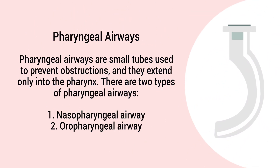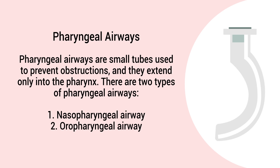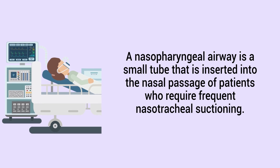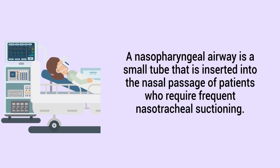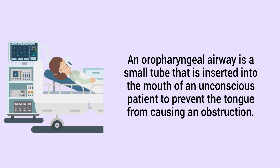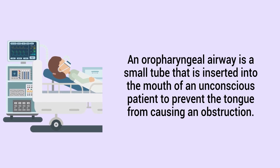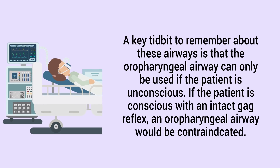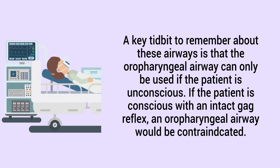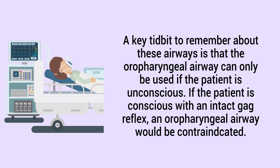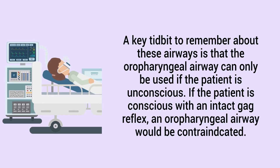Pharyngeal airways are small tubes used to prevent obstructions, and they extend only into the pharynx. There are two types: nasopharyngeal and oropharyngeal. A nasopharyngeal airway is inserted into the nasal passage of patients who require frequent nasal tracheal suctioning. An oropharyngeal airway is inserted into the mouth of an unconscious patient to prevent the tongue from causing an obstruction. Importantly, the oropharyngeal airway can only be used if the patient is unconscious — if the patient is conscious with an intact gag reflex, it would be contraindicated.